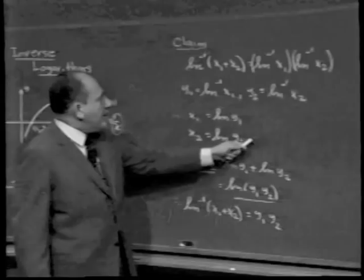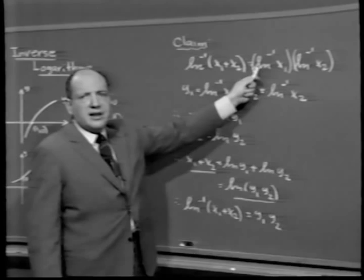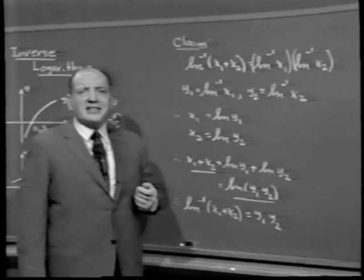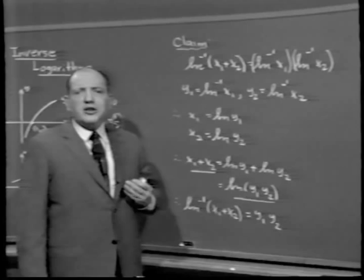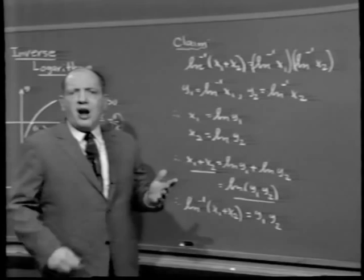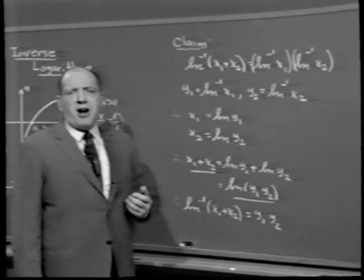Taking this relationship and inverting it gives us: the inverse natural log of (x1 plus x2) equals y1 times y2, which is the inverse natural log of x1 times the inverse natural log of x2. This is an example of how once we learn a new concept, we can bring to it all of our old knowledge. All these things come from our basic definition.